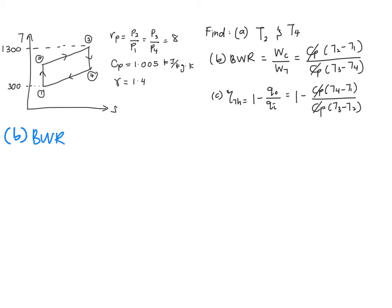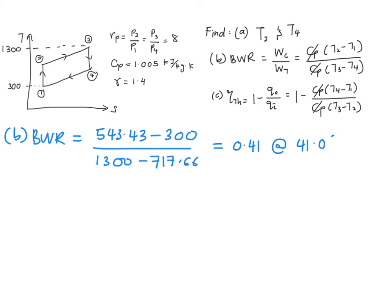In order to find your back work ratio, it equals (T2 minus T1) over (T3 minus T4). You plug in all the values that you have, and finally, you are going to get 0.41 or 41%. This means that 41% of your turbine output is used to drive your compressor.